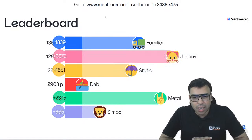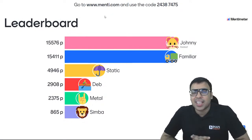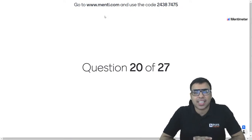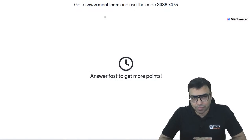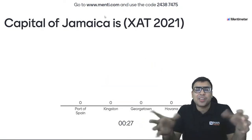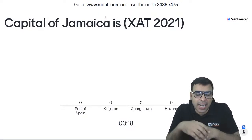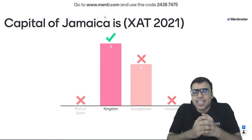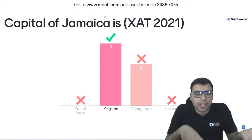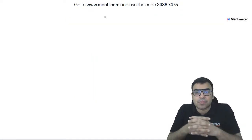Leaderboard: Johnny is rank 1 — there is a neck and neck competition between Johnny and Familiar. Then Static, then Deep, then Metal, then Simba. Question number 20: what is the capital of Jamaica? This was asked in a match-the-following format in a previous exam. Options: Port of Spain, Kingston, Georgetown, Havana. Jamaica is one of the countries of West Indies, also called the Caribbean Islands. The right answer is B — Kingston is the capital of Jamaica.